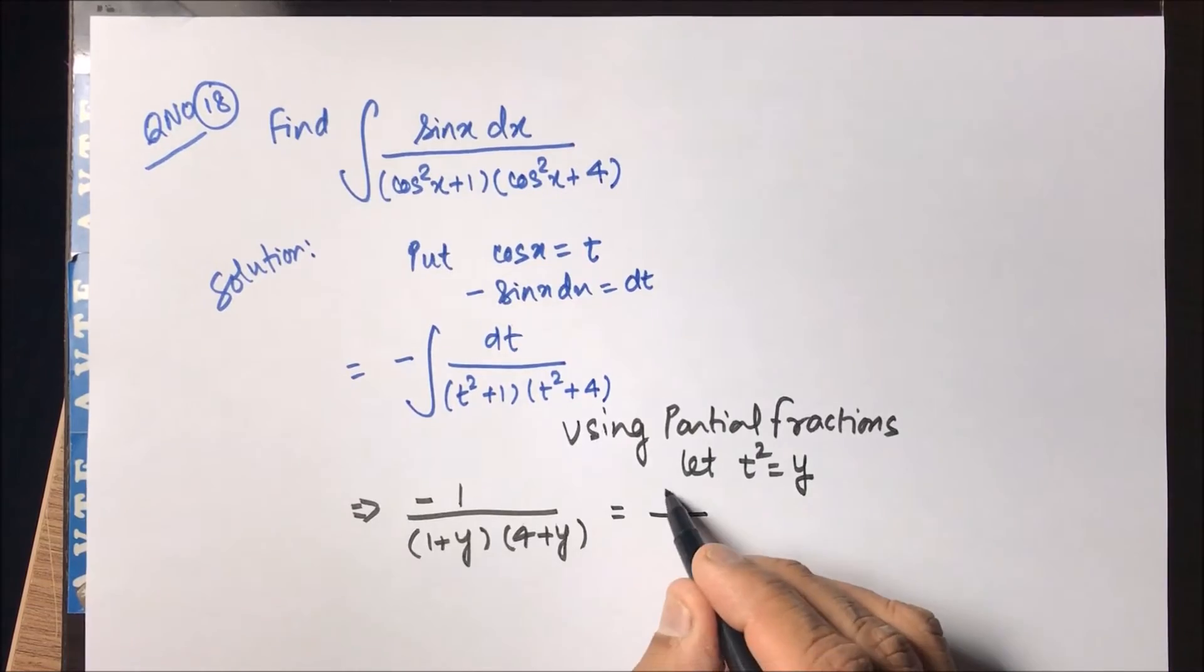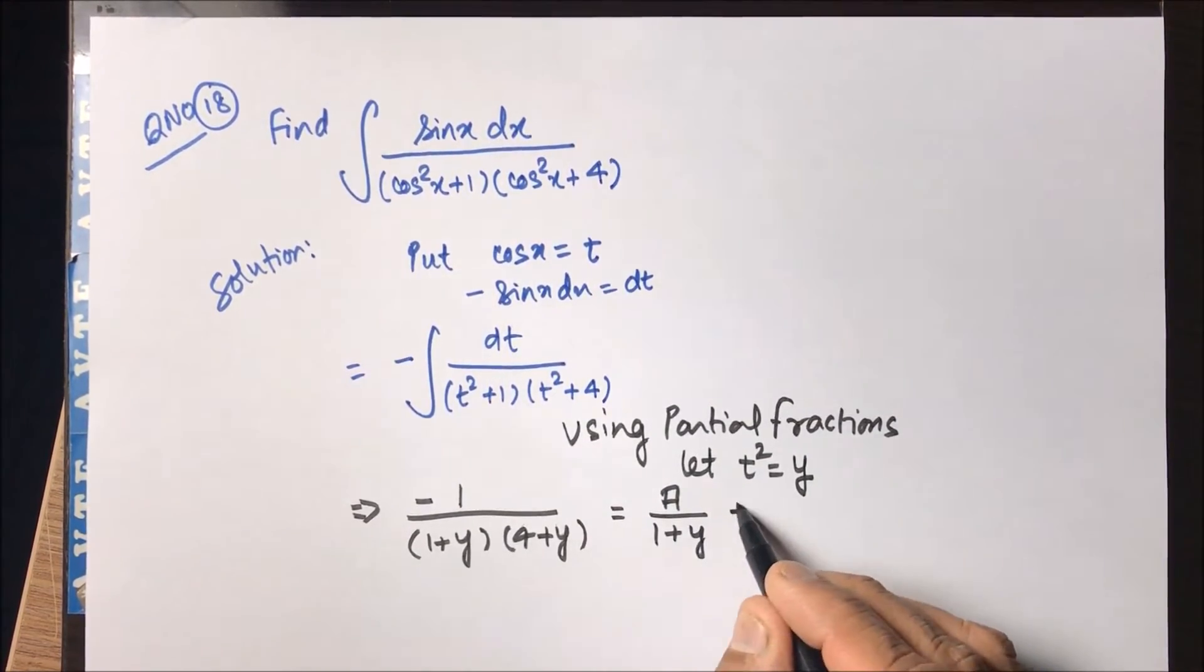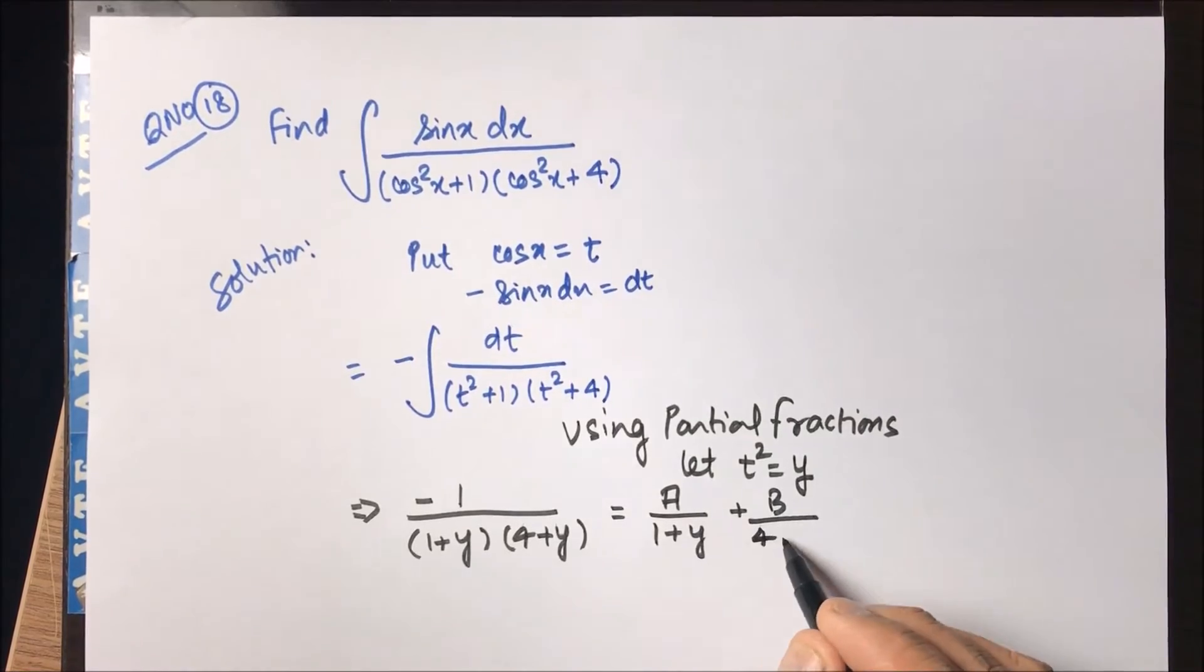And because these are linear factors, so you can take them as A upon one plus y plus B upon four plus y.